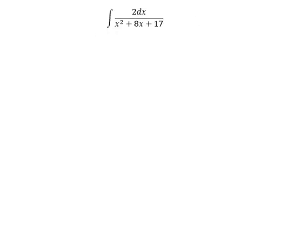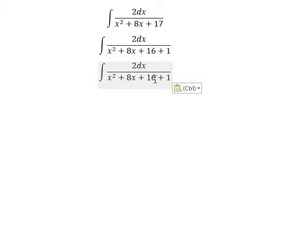We need to analyze the denominator. We separate it into 16 + 1. So we have x² + 8x + 16, and we can write this as (x + 4)² + 1.